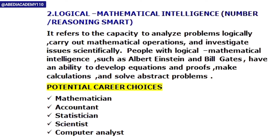The second type is logical-mathematical intelligence — number or reasoning smart. If you have this type, you can easily analyze logical problems, carry out mathematical operations, and investigate scientific issues. Examples include Albert Einstein and Bill Gates. These people have the ability to develop equations, give proofs, make calculations, and solve abstract problems. Career options include mathematician, accountant, statistician, scientist, or computer analyst.